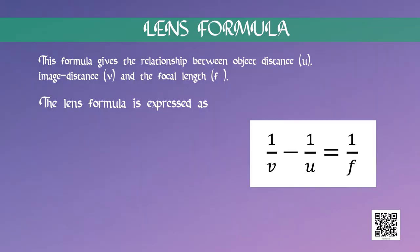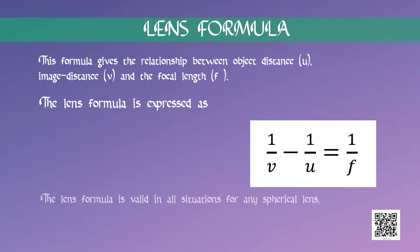Lens Formula: as we have a formula for spherical mirrors, we also have a formula for spherical lenses. This formula gives the relationship between object distance u, image distance v, and the focal length f. The lens formula is expressed as 1/v minus 1/u equals 1/f. The lens formula is valid in all situations for any spherical lens. Take proper care of the signs of different quantities while putting numerical values for solving problems relating to lenses.